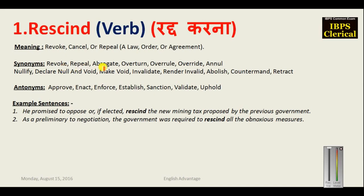To summarize: Revoke, Repeal, Abrogate, Overturn, Overrule, Override, Annul, Countermand — render invalid and make something null and void, no longer enforce. The corresponding antonyms for rescind are: approve, enact, enforce, establish, sanction, validate and uphold. Uphold means to maintain something; its second and third forms are upheld. Ratify — noun form ratification — also means to sanction something.